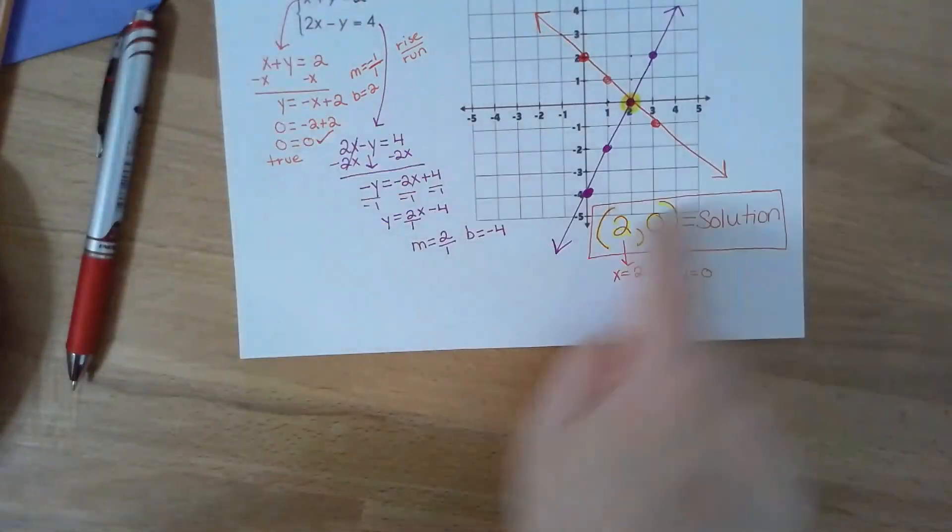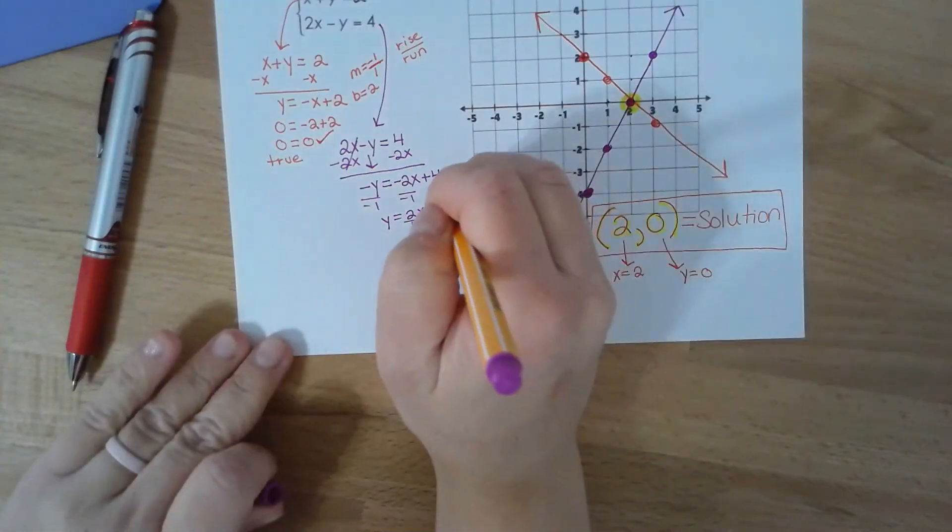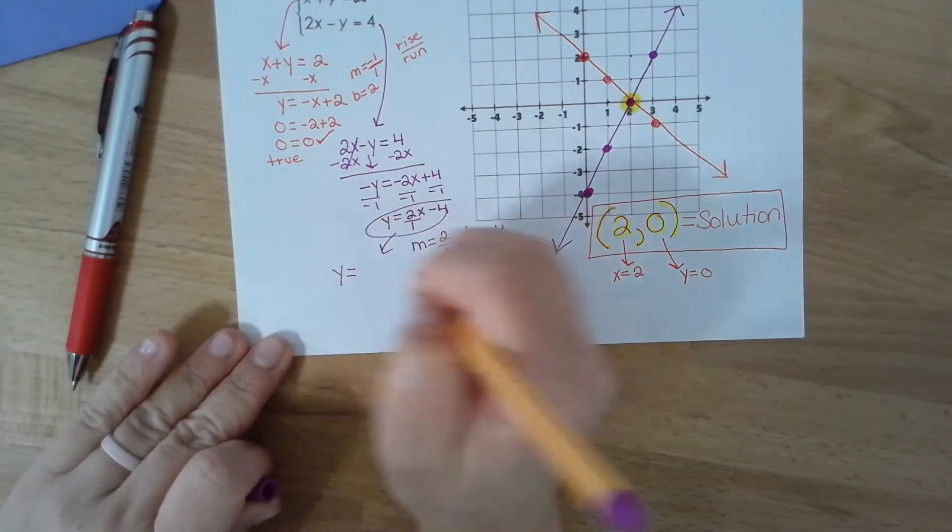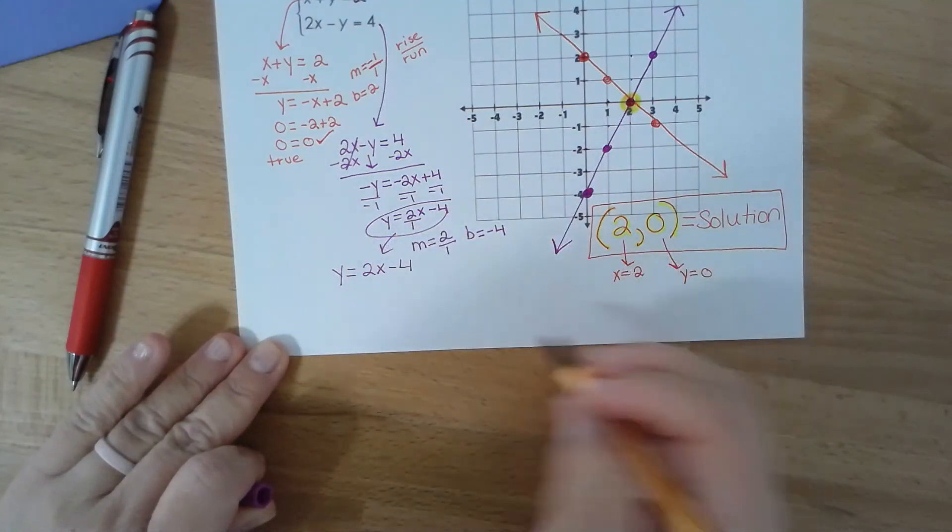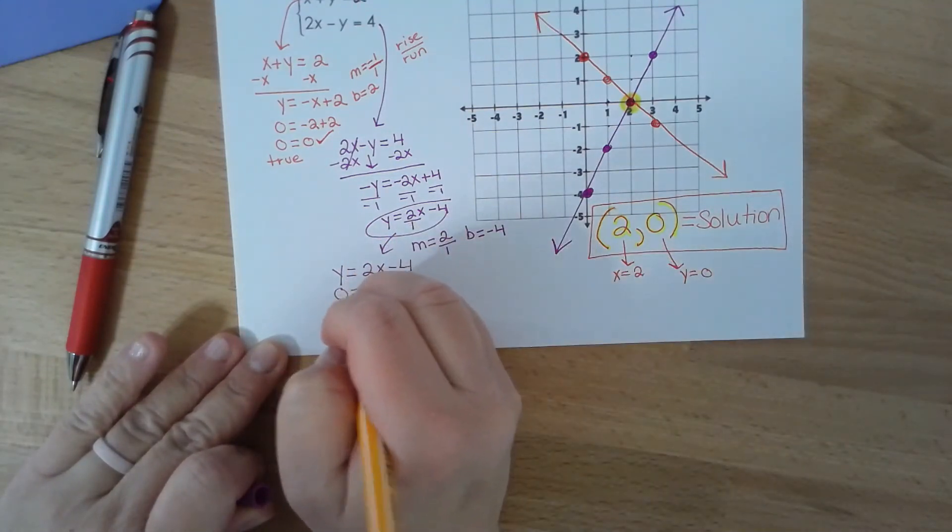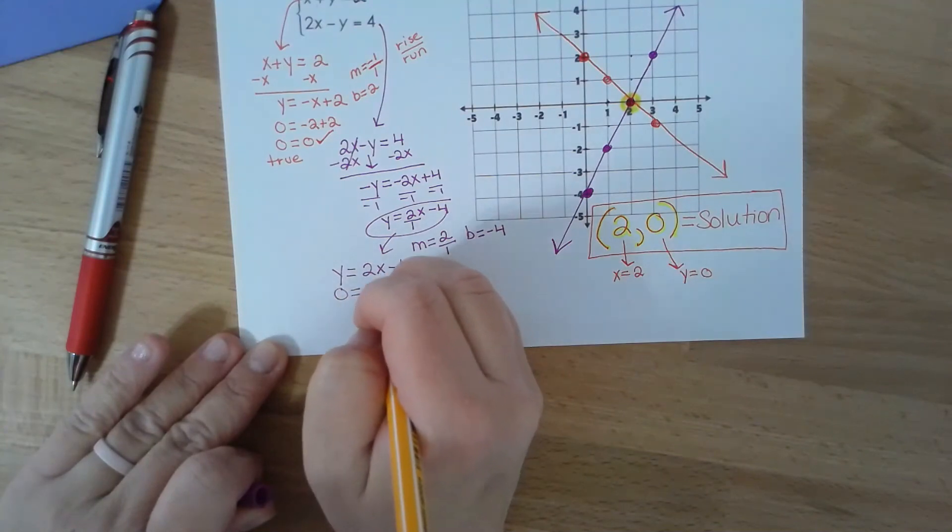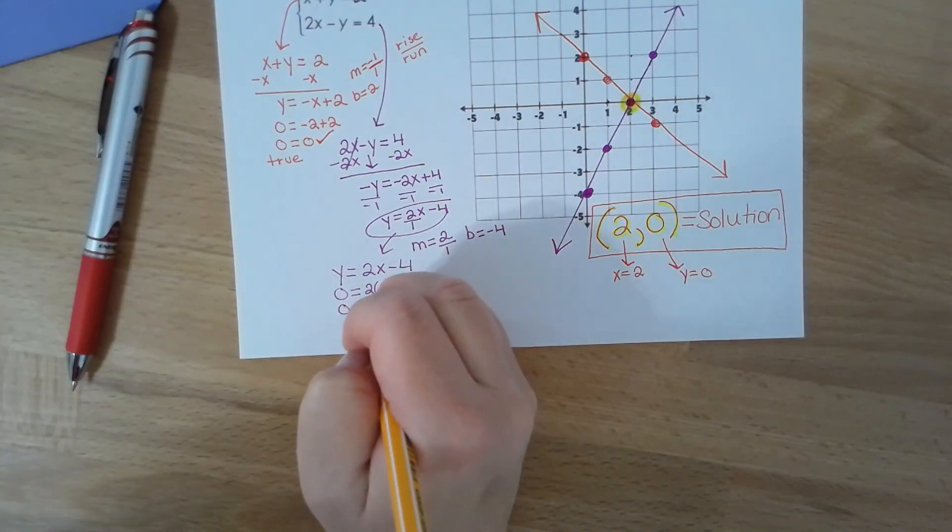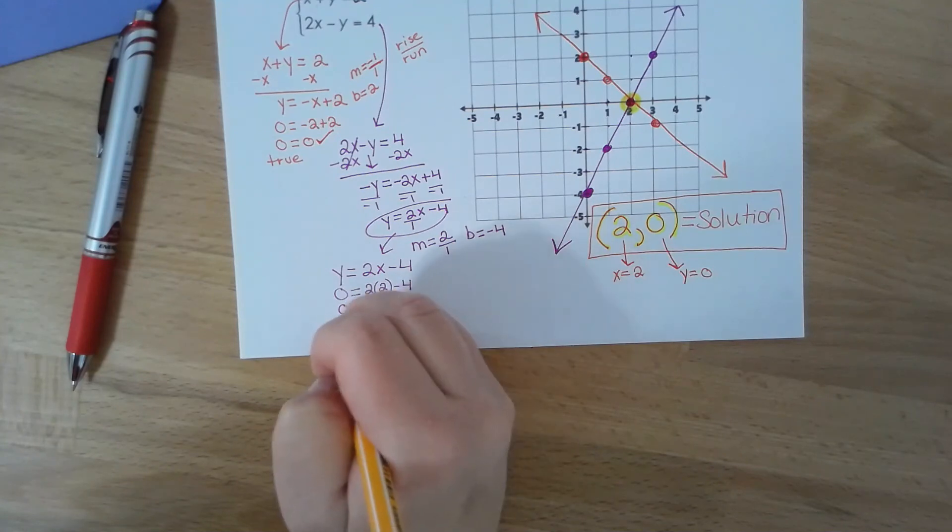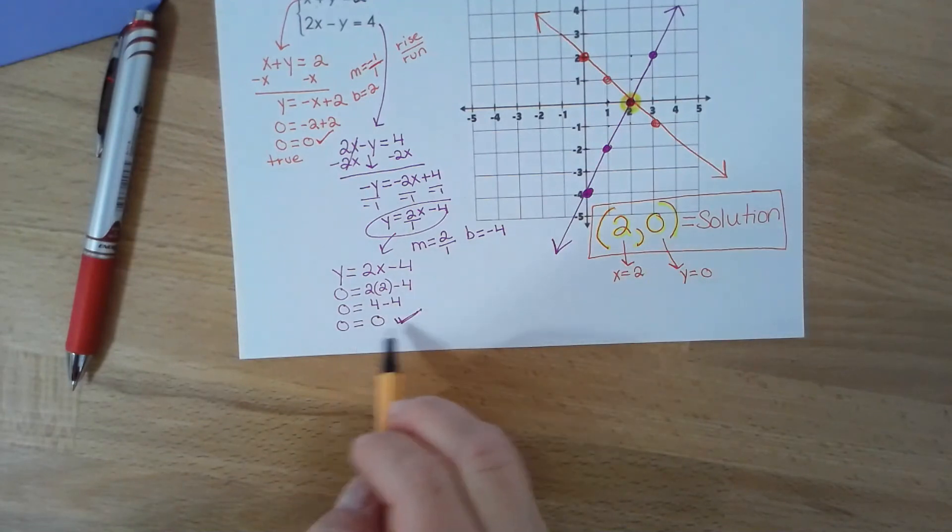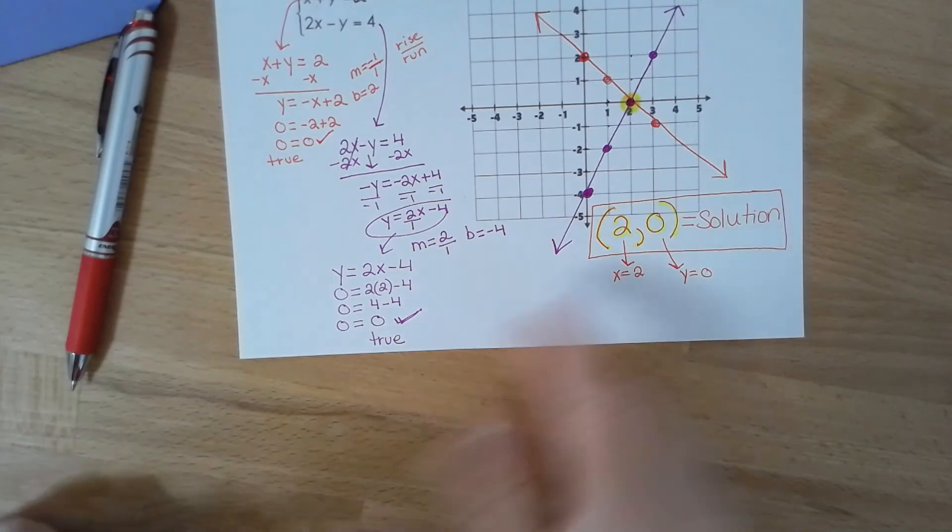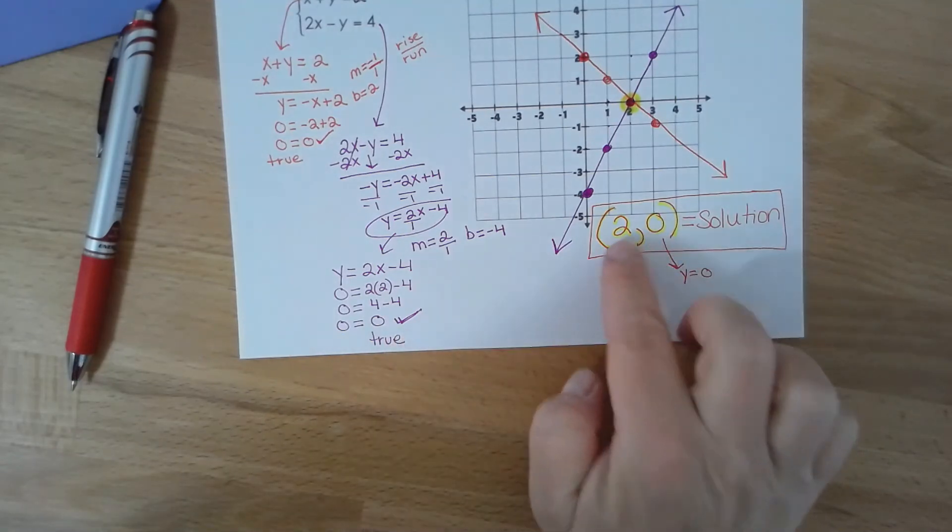Because visually we can see. Now if I take the second line which was y equals 2x minus 4, and I plug in two for x and zero for y, and I simplify by using order of operations showing step by step, what happened here? Are both sides equal? Yes, so that's also true. So that's what it means to be a solution. So this point satisfied both equations, which means this point lies on both lines.